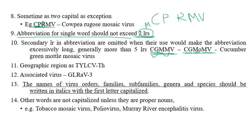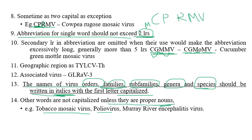Geographical regions and associated viruses can also be named. Very importantly, names of virus orders, families, subfamilies, genera, and species should be written in italics with the first letter capitalized — similar to binomial nomenclature used in fungi and bacteria. Other words need not be capitalized unless they are proper nouns — for example, 'Tobacco mosaic virus' or 'Murray River' (a proper noun).